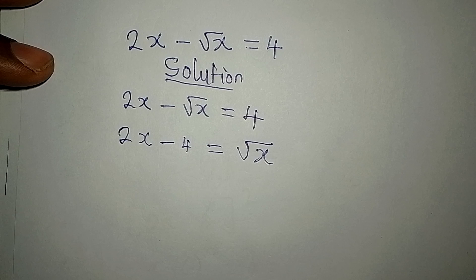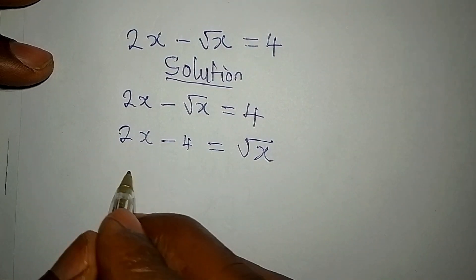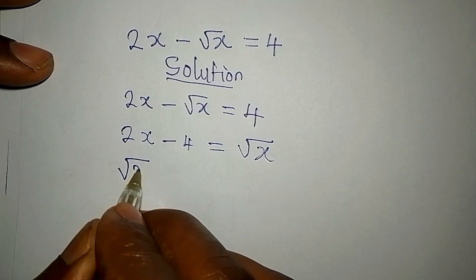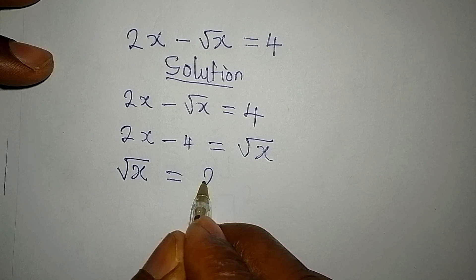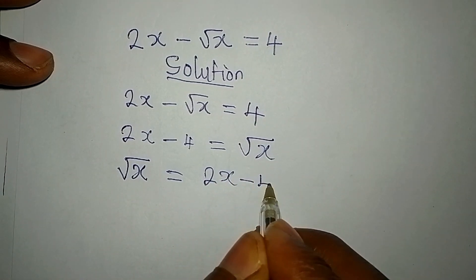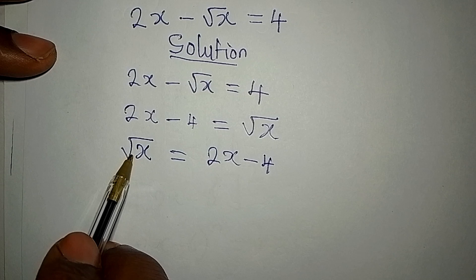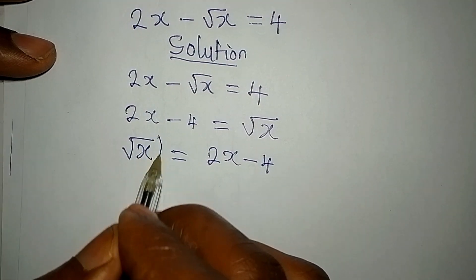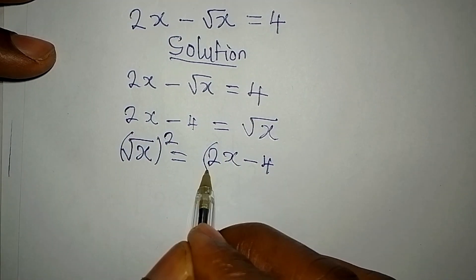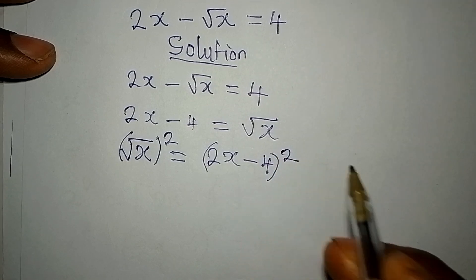But I will prefer this to be on the other side. So I will write square root of x to be equal to 2x minus 4. Now what do I do? Since I want to remove this from here, I would have to square this. Then put this together and you square it.